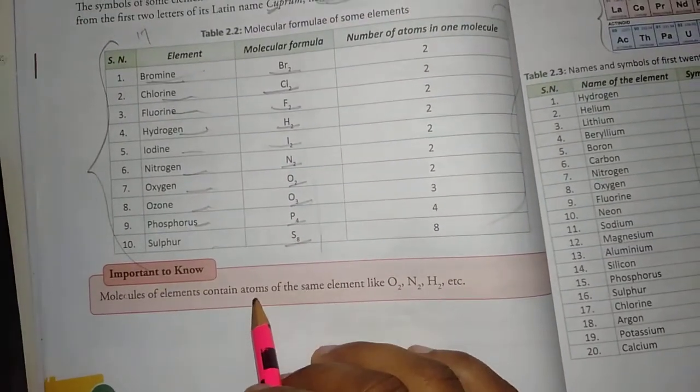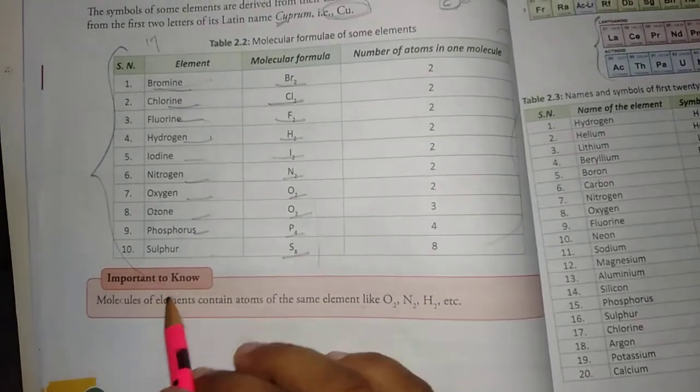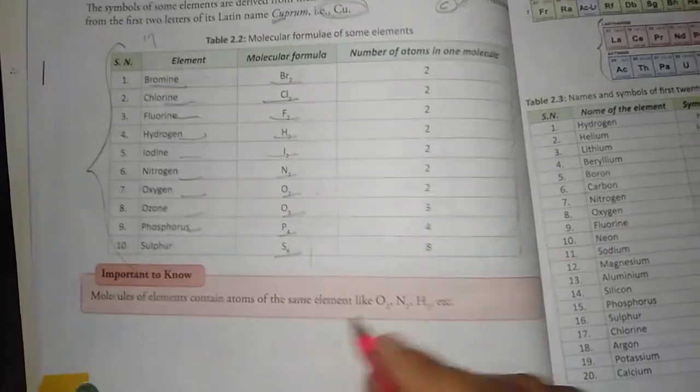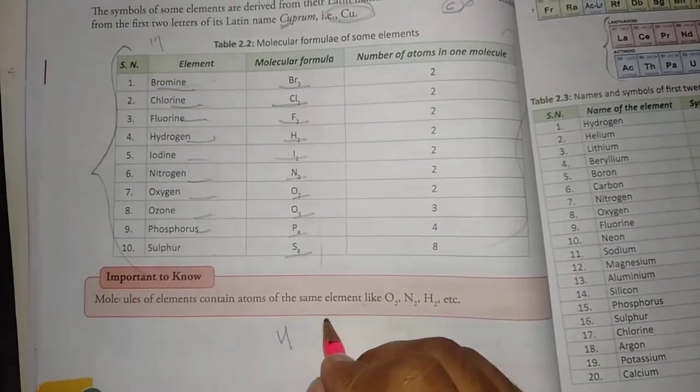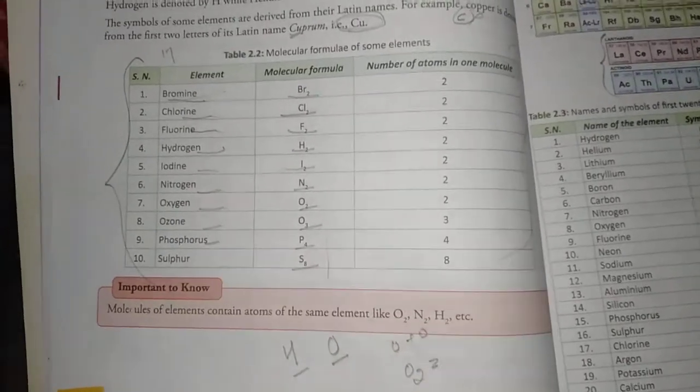Here we have a note. Molecules of elements contain atoms of the same element, like O2, N2, etc. This is not one hydrogen or one oxygen alone. O plus O makes O2, a molecule.